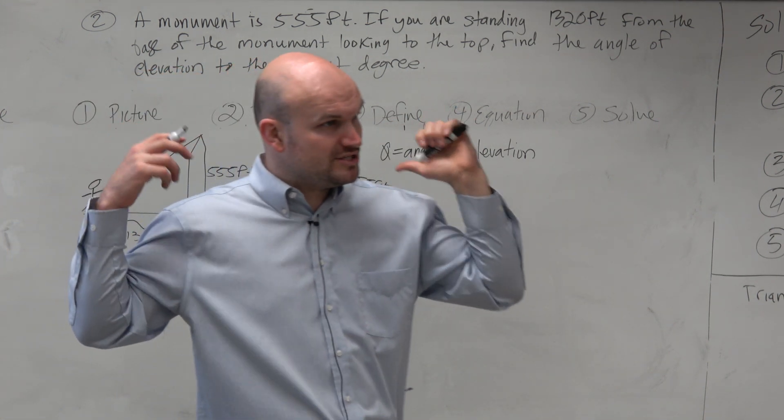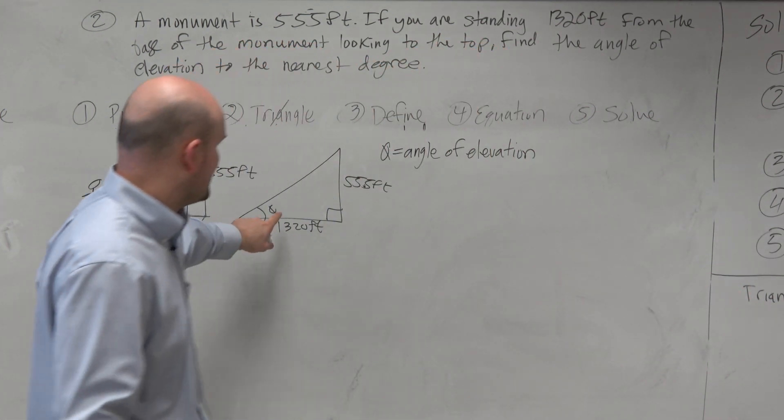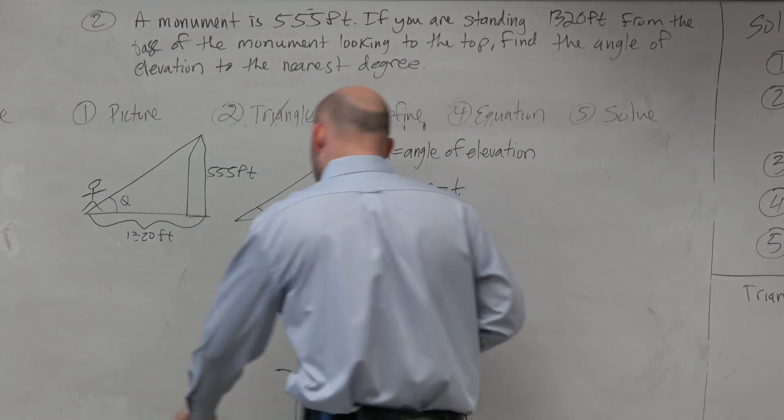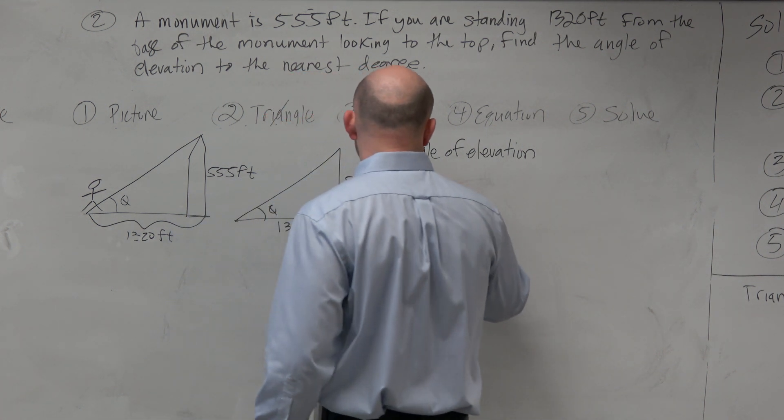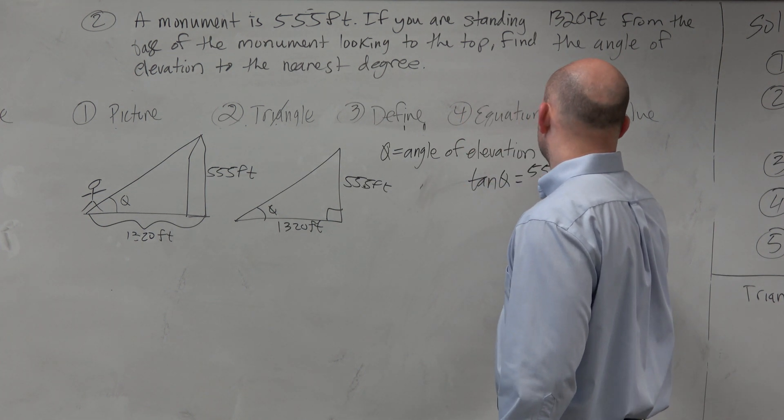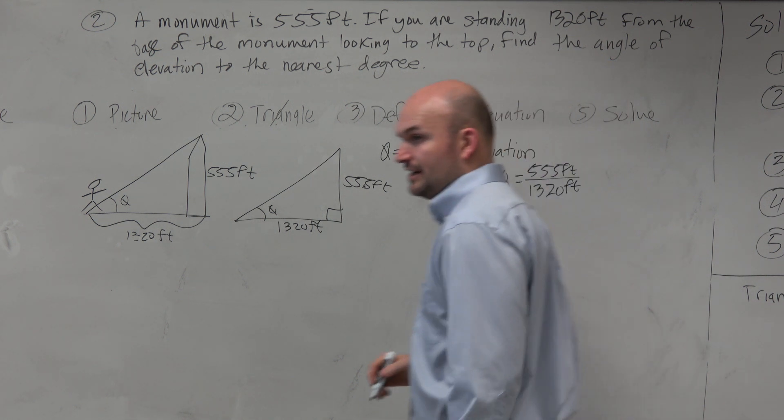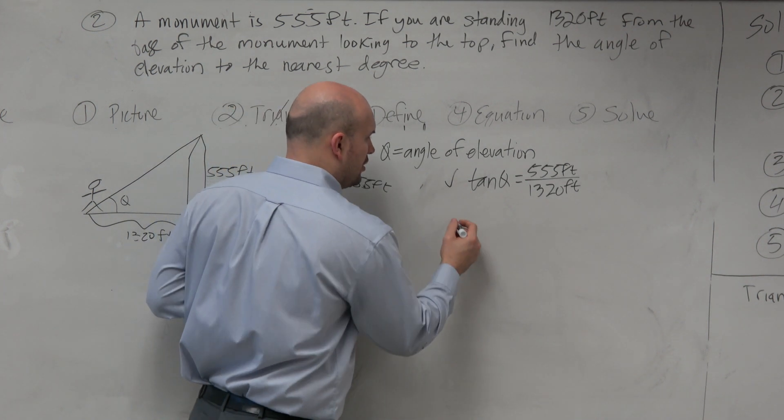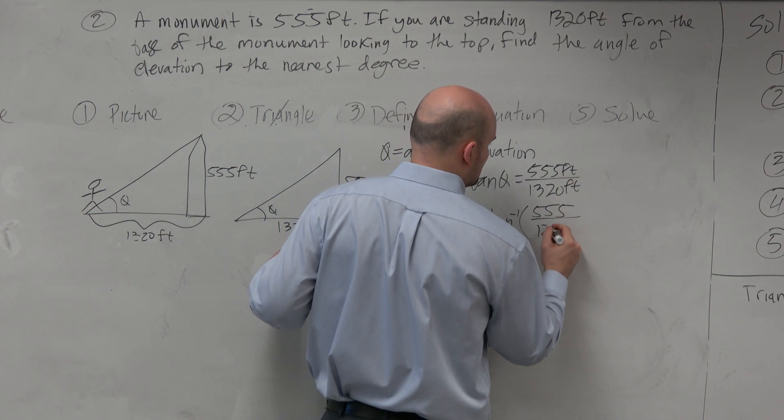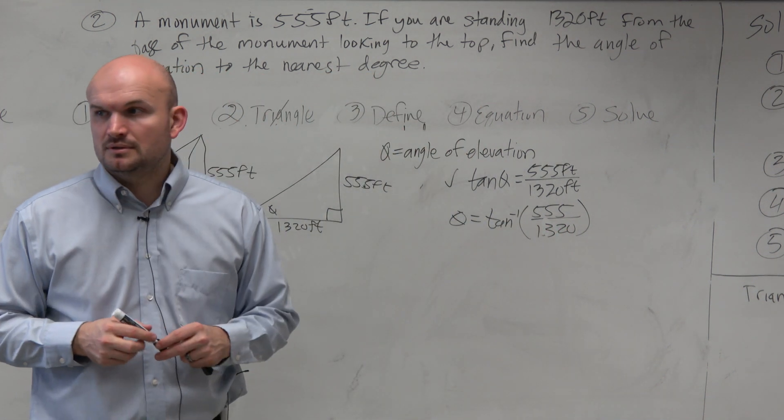The next thing is setting up an equation. This is what we just did. We have a triangle. We have a variable that is defined. Now we're just going to set up an equation. And we recognize here, we see, well, that's going to be tangent there. So we can say theta equals, I'm sorry. You could do that, but let's just write the full equation. Let's write the equation. Tangent of theta is equal to opposite over hypotenuse. So you could write that as your equation. Or you could say theta equals tangent inverse of 555. You could divide off the feet and do 1,320. That works as well.